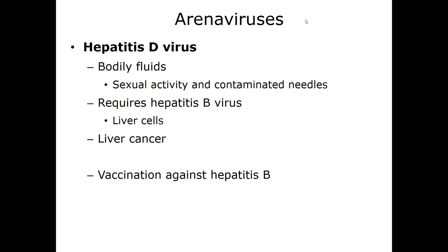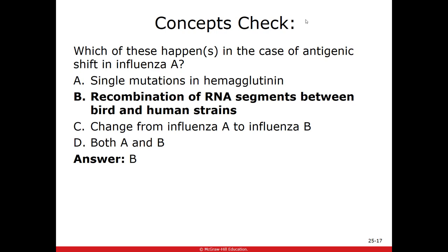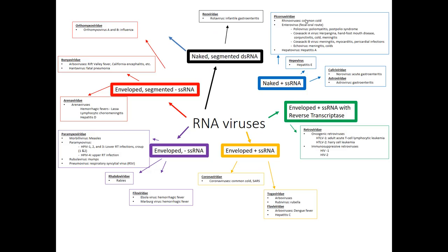Concept check question: what happens in the case of antigenic shift in influenza A? Antigenic shift is any recombination of RNA segments between bird and human strains, or other animals like swine — that mixing of genetics from two different organisms. Moving on, we're working our way down to the enveloped, single-stranded RNA group — some have the negative strand, some have the positive strand, but they're all enveloped, meaning they steal our host cell membrane.